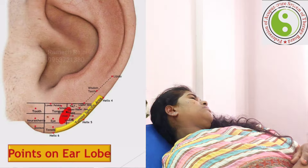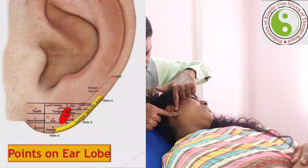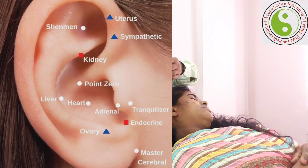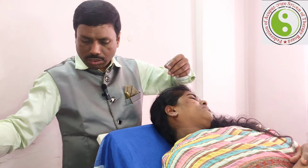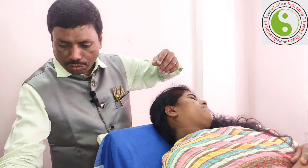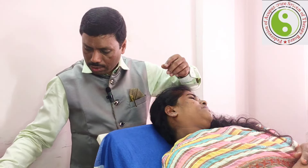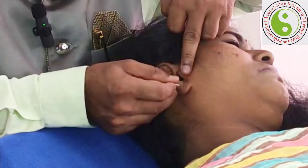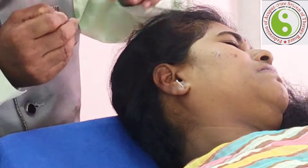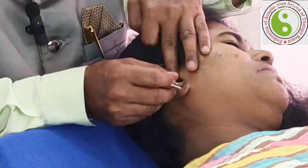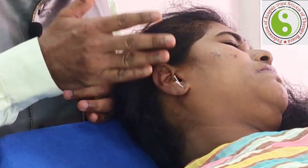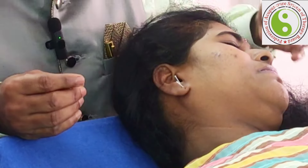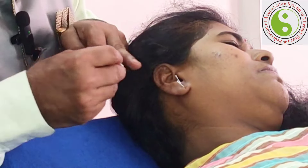Now let me proceed to the lobe. The lobe is divided into nine divisions. I wanted to apply the half-tuned needles — I use the half-tuned needles rather than micro needles, but this is also applicable. Now I am applying to the lower portion of the lobe. This is known as the tonsils point, and the central part is known as the eye system. The right ear is treatable for the right eye.